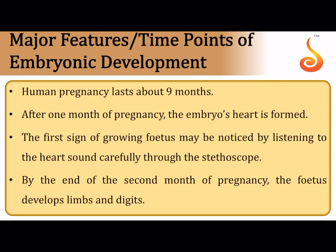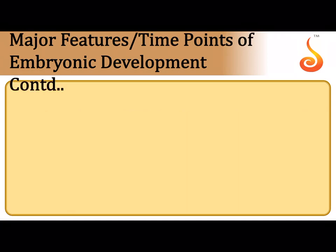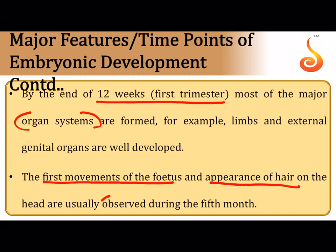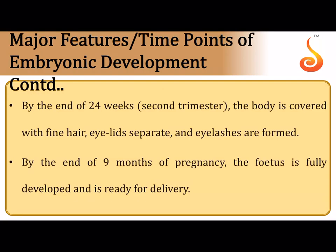Some major features of human pregnancy: it lasts nine months. About one month after pregnancy, the embryo's heart is formed and can be heard with a stethoscope. At the end of the second month, the fetus develops limbs and digits. By the end of 12 weeks (first trimester), most major organ systems are formed. The first movements of the fetus and appearance of hair on the body are usually observed during the fifth month. By the end of the second trimester (24 weeks), the body is covered with fine hair, eyelids are separating, and eyelashes are formed.